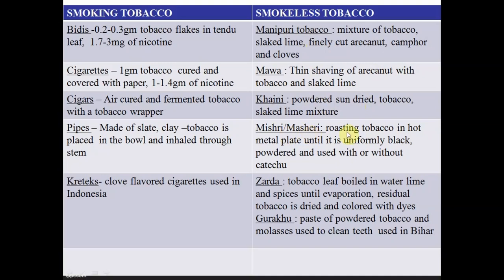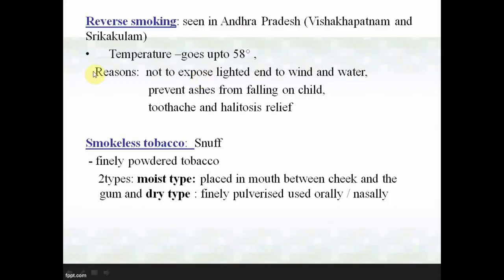Smokeless tobacco forms include: snuff, placed in the buccal pad or lower lip region. Manipuri tobacco is a mixture of tobacco, slaked lime, finely cut areca nut, camphor, and cloves. Mawa consists of thin shavings of areca nut with tobacco and slaked lime. Khaini is powdered sun-dried tobacco and slaked lime mixture. Mishri is tobacco roasted on a hot metal plate until uniformly black and powdered. Sarda involves tobacco leaves boiled in water with lime and spices. Gul is a paste of powdered tobacco and molasses used to clean teeth, commonly used in Bihar.